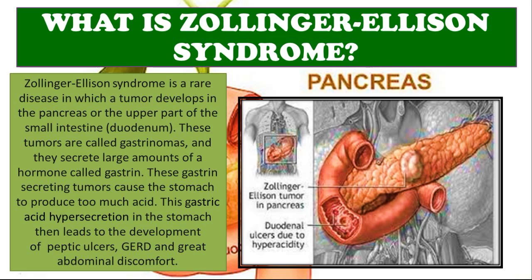So basically, Zollinger-Ellison syndrome is when these tumors develop in the pancreas or the first part of the small intestine called the duodenum. These tumors are called gastrinomas and they release the hormone gastrin, which acts on the stomach causing it to produce too much acid. This gastric hypersecretion is responsible for most of our patients' symptoms, including peptic ulcers, GERD, abdominal discomfort, and heartburn.